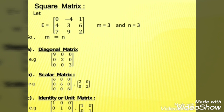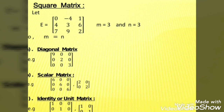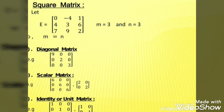The next type is identity or unit matrix. In an identity matrix, the principal diagonal elements must equal one. Identity matrix is also a scalar matrix. The diagonal elements are non-zero, all other elements are zero, and the principal diagonal elements must specifically be equal to one. If they are not one, it is not an identity or unit matrix — they must be one.